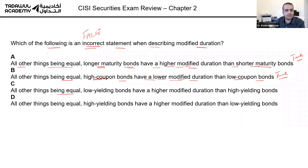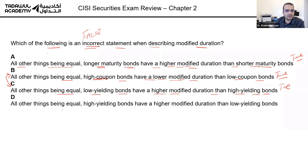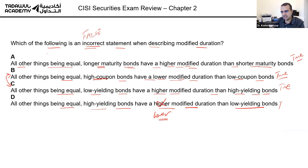Low-yielding bonds have a higher modified duration than high-yielding bonds — also true, and B and C are saying the same thing. But option D says high-yielding bonds have a higher modified duration than low-yielding bonds — that is false, because high-yielding bonds have lower risk since they pay us more money. So the answer is D.